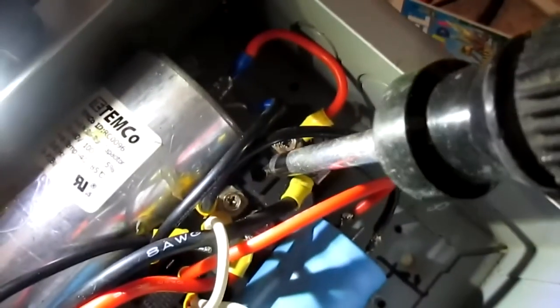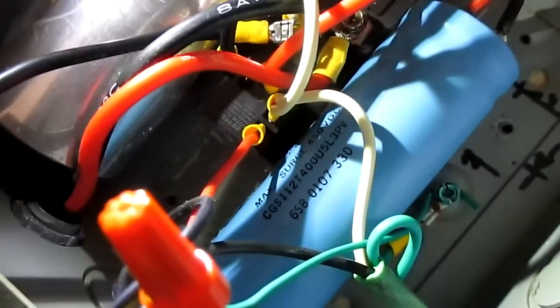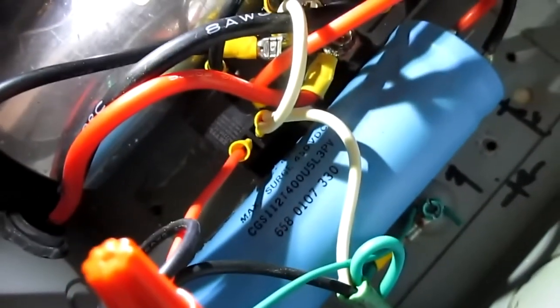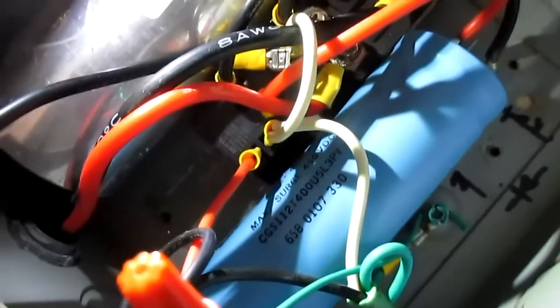There's your rectifier down there, 150 amp. There's a run capacitor, that's your electrolytic capacitor. Down here you have a 120 volt AC powered relay, normally open or normally closed.